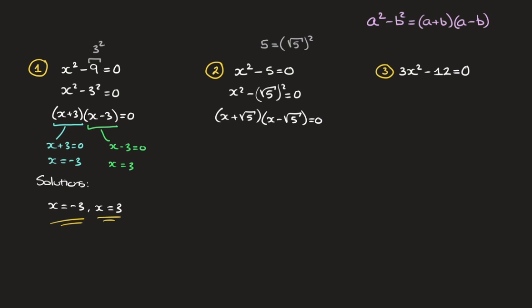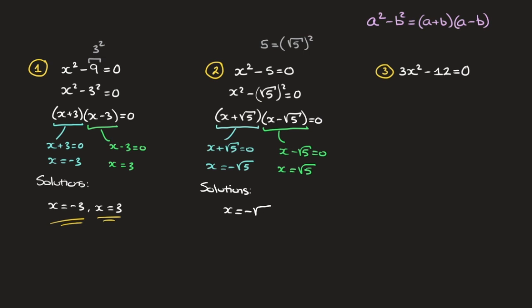Once again on the left hand side we have two pairs of parentheses being multiplied and the product is equal to 0. The only way that's possible is if either x plus the square root of 5 equals 0, or x minus the square root of 5 equals 0. Solving each of these two equations leads to x equals negative root 5 and x equals positive root 5. These two values of x are the solutions to this quadratic equation. Solutions: x equals negative root 5 and x equals root 5.